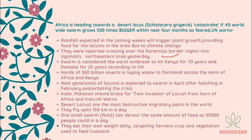These 360 billion insects eat and destroy entire farming areas, killing crops across whole countries — and this can affect Rajasthan as well. The next generation of locusts is expected to swarm in April after hatching in February, which will further exacerbate the crisis.